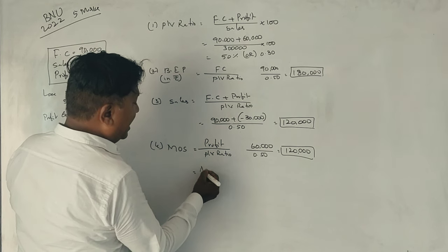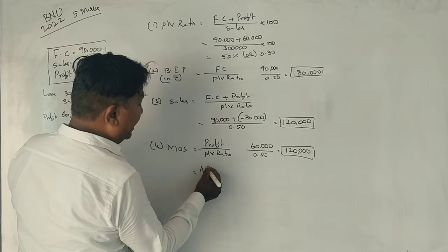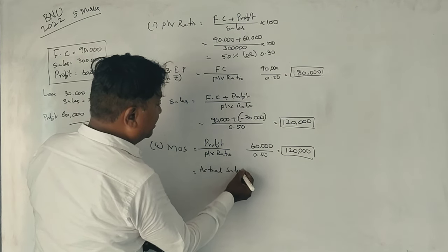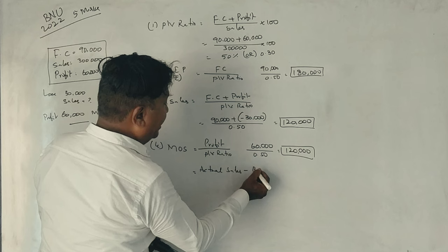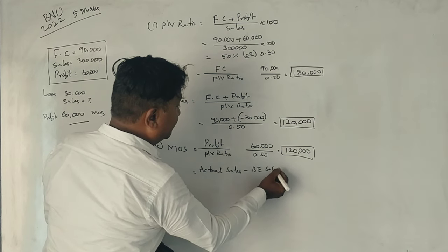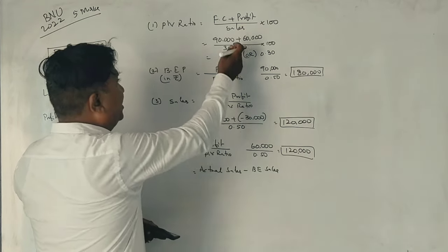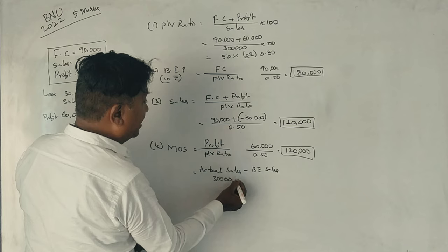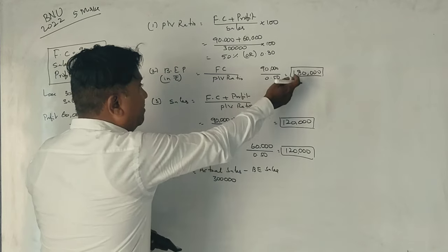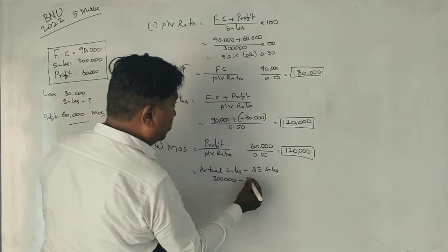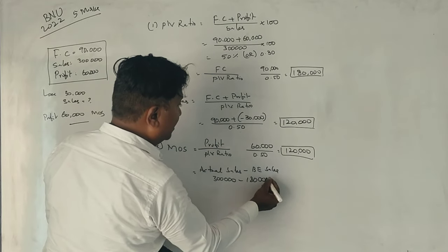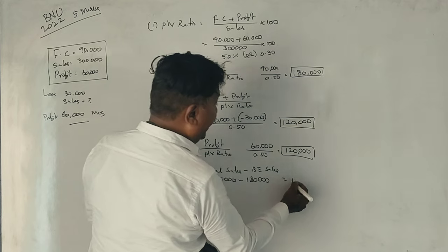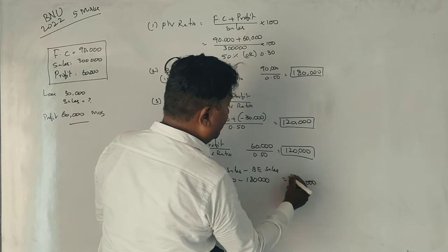Alternatively, margin of safety is actual sales minus break-even sales. Actual sales is 3,00,000 rupees and break-even sales is 1,80,000 rupees. So, 3,00,000 minus 1,80,000 equals 1,20,000 rupees margin of safety.